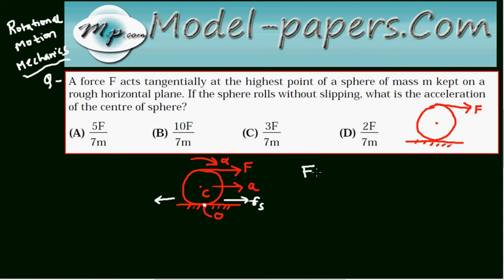The force F plus frictional force F_s produce the acceleration A, which is the linear acceleration. M is the mass of the sphere. A similar equation we can write for rotational motion using Newton's law.